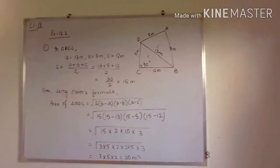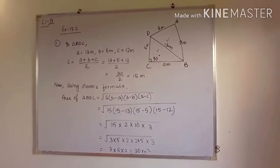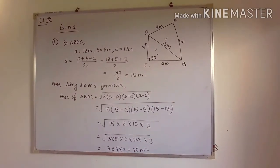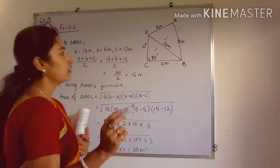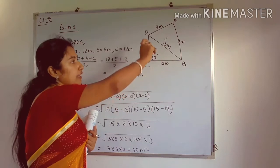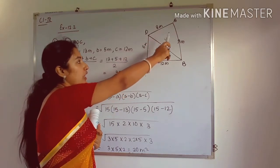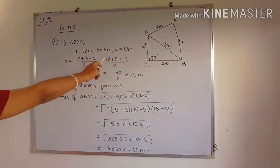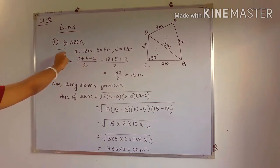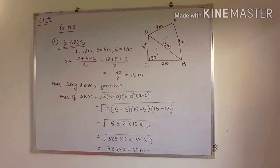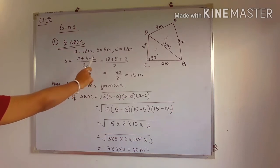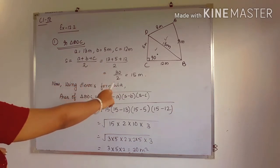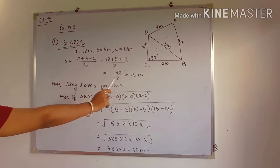After finding the hypotenuse, which is also the diagonal of the quadrilateral, we can apply Heron's formula to triangle BDC and then to triangle ADB. For triangle BDC, we write the three sides as A, B, and C. The semi-perimeter is (A + B + C) / 2 = 30 / 2 = 15 meters.